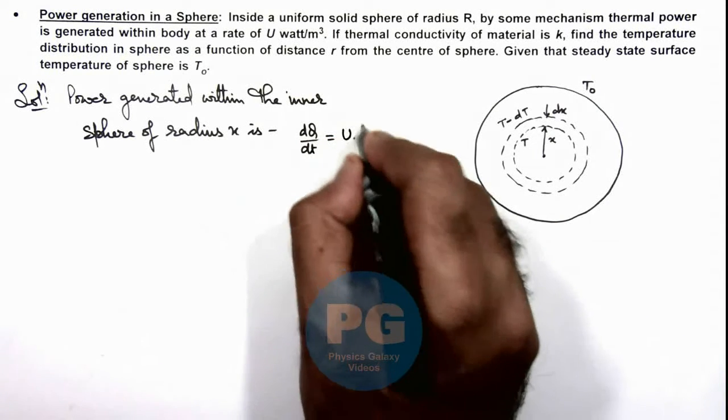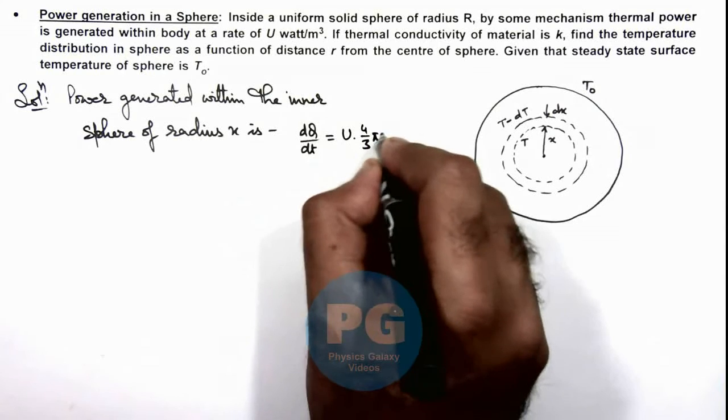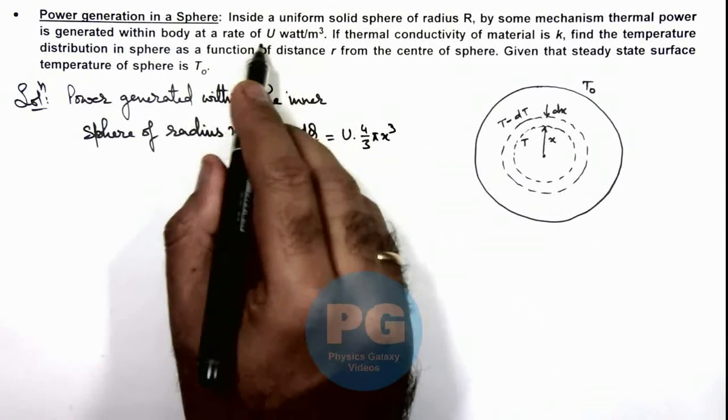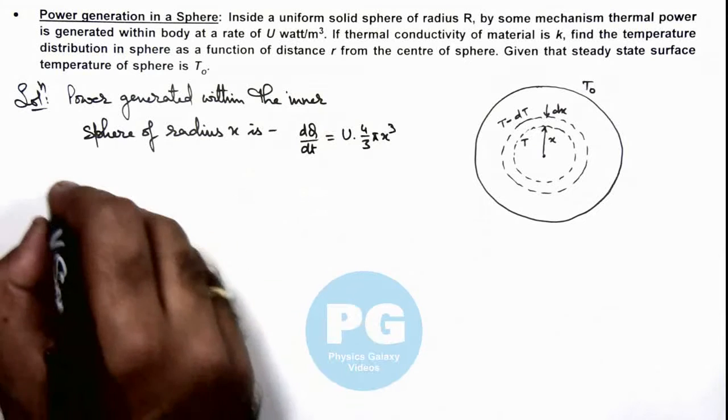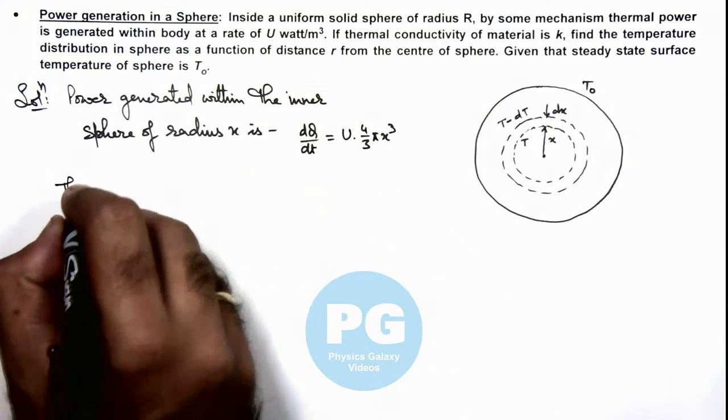U multiplied by 4/3 π x³, because U is given as power produced per unit volume. And we can also write that this power